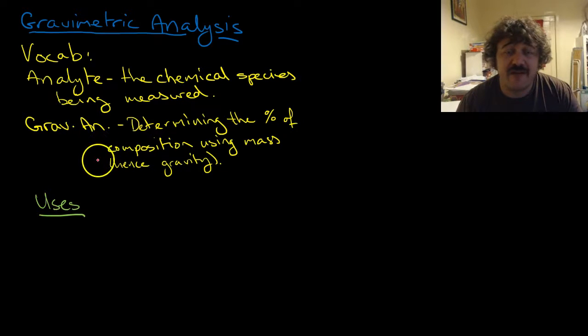Now gravimetric analysis is determining the percentage composition using mass. Hence 'gravity,' because we use gravity to pull the mass down on the scales so we know what it is.